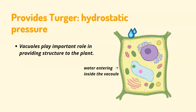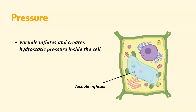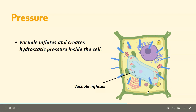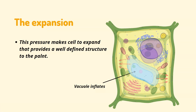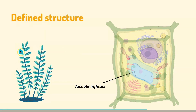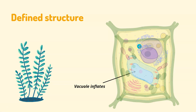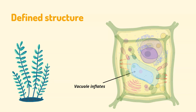When a cell takes in water from the environment or from the soil, the water enters the cell and is also taken in by the vacuole. Due to this, the vacuole starts inflating. When the vacuole inflates, it creates hydrostatic pressure against the cytoplasm wall within the cell, causing the cell to expand. This provides a well-defined structure — turgor and rigidity — to the plant.